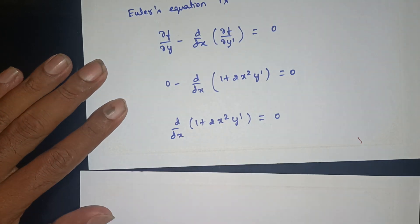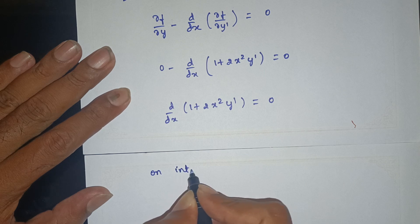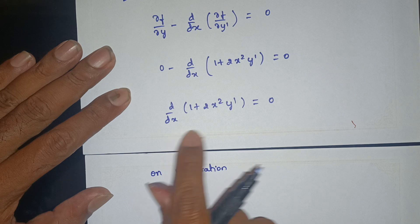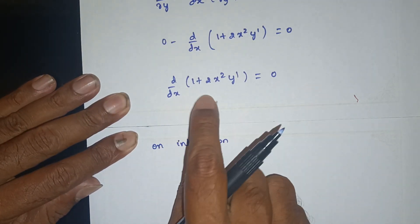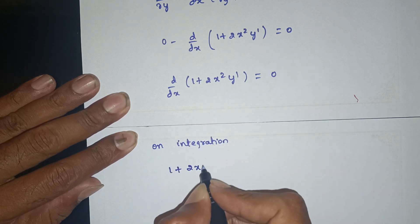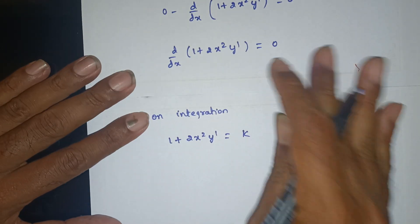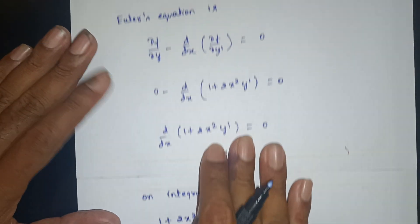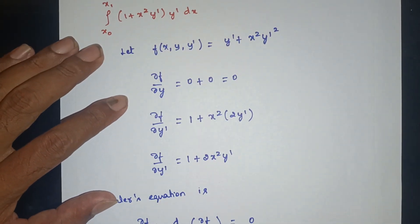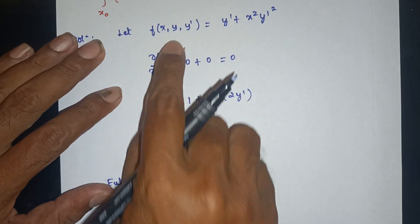Euler's equation becomes: integrating with respect to x, 1 + 2x²·y' is equal to 0. Integrating both sides, we proceed to solve for y' with respect to x.